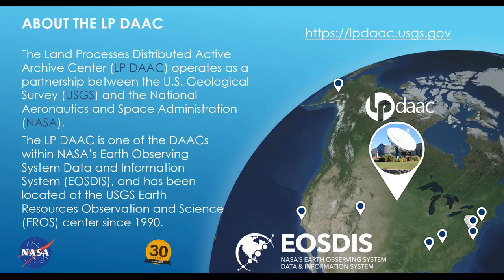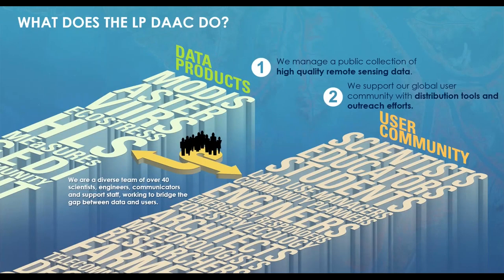NASA's Land Processes Distributed Active Archive Center, LP DAAC, is located in Sioux Falls, South Dakota, at the USGS EROS Center—also the home of the Landsat Archive. We are one of the NASA EOS DAACs focusing primarily on archiving, distributing, and supporting NASA's land remote sensing data products. In addition to archiving and distributing data, we provide services and support to advance the access, understanding, and use of our data for large and diverse user communities. We also support other missions including MODIS, ASTER, VIIRS, ECOSTRESS, and HLS, but today we're focused on GEDI LiDAR data.